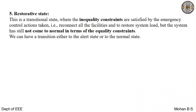In the restorative state, equality constraints are satisfied by emergency control actions; however, inequality constraints are not satisfied, thus not yet reaching normal state. There can be a transition either to alert state or to normal state. If going to alert state, preventive control actions must be taken so that the system moves to normal state.